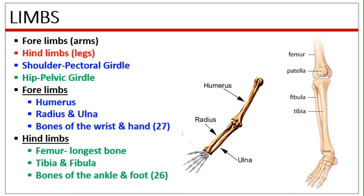Our limbs can be divided into three parts. The upper arm, extending from the shoulder to the elbow, has one bone called the humerus. The lower arm from the elbow to the wrist consists of two bones: radius and ulna. The wrist and hand are made up of 27 bones. Similarly for the hind limb, the upper leg from the hip to the knee has one bone known as the femur or thigh bone — this is the longest bone in our body. The lower leg from the knee to the ankle has two bones: tibia and fibula. The ankle and foot are made up of 26 small bones.